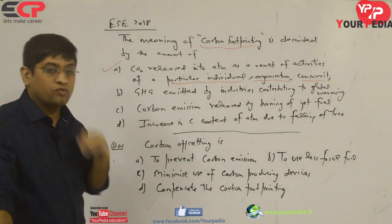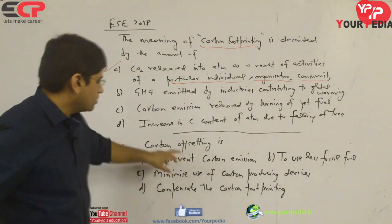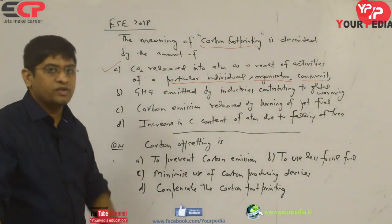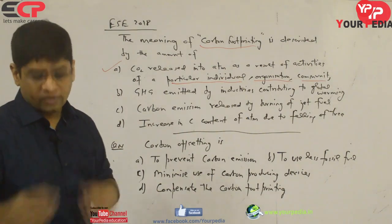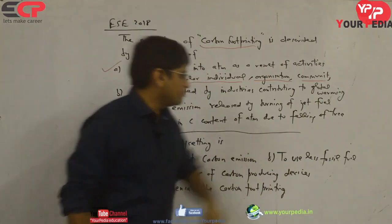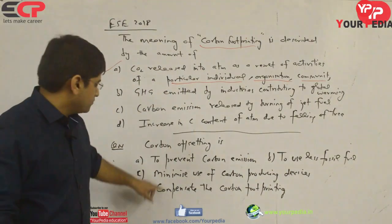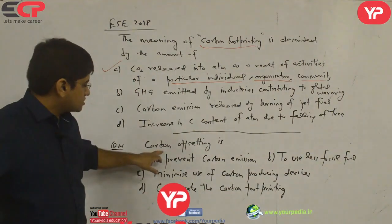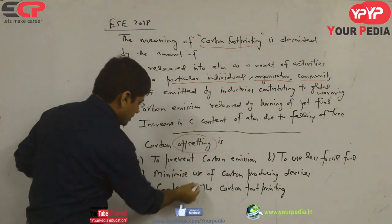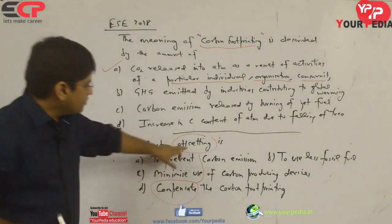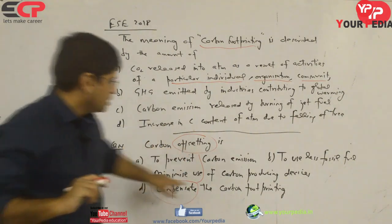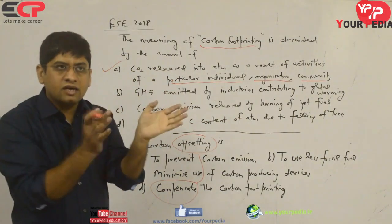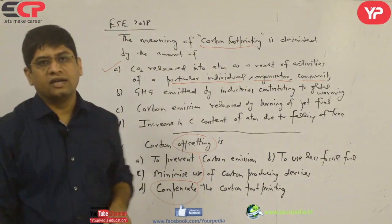Carbon offsetting may appear in future exam questions. It is not about preventing carbon emission or minimizing use of fossil fuels, since we cannot have alternates immediately. The English meaning of 'offset' is compensation. Carbon offsetting is the compensation for carbon footprinting — footprinting is the release, offsetting is the sinking. When footprinting and offsetting are balanced, you get carbon neutrality.